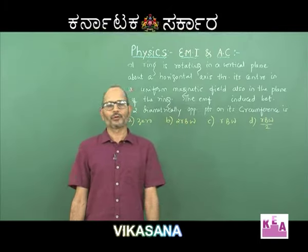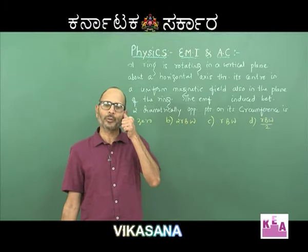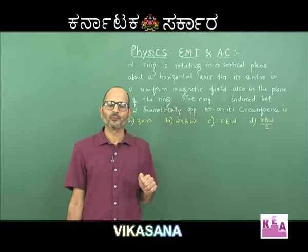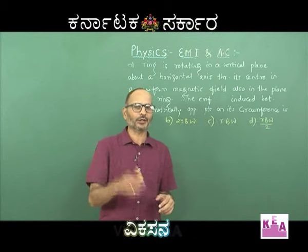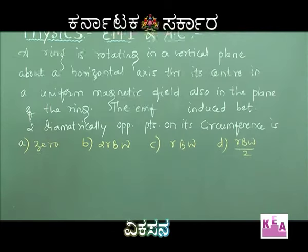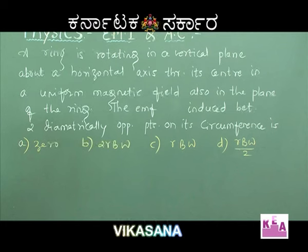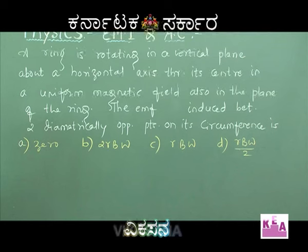Here is one more beautiful problem on electromagnetic induction. A ring is rotating in a vertical plane about a horizontal axis through its center in a uniform magnetic field also in the plane of the ring. The EMF induced between two diametrically opposite points on its circumference is — what?